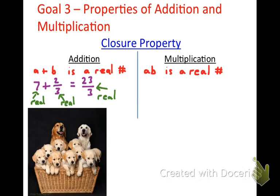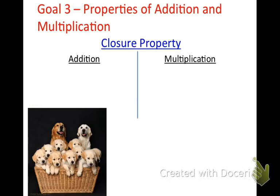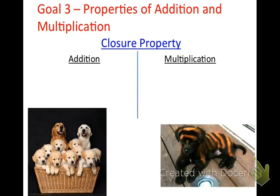What happens if you mix a dog with a cat — two things that aren't the same? Well, you get something like this funny tiger-dog picture, and that's not closure. The closure property is simply when you add or multiply two real numbers and get a real number as a result.